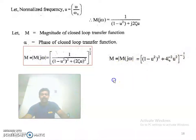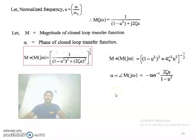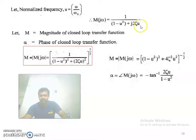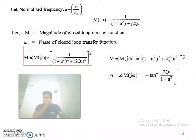This is the magnitude expression. The angle (phase) is: α = -tan⁻¹(2ζu / (1 - u²)). The negative sign arises because the expression is in the denominator. This is the phase of the closed loop transfer function.